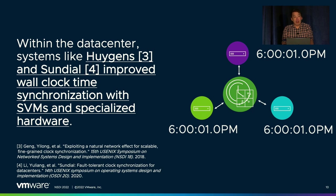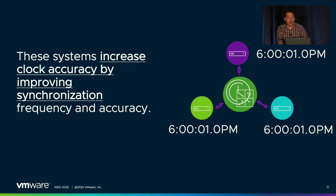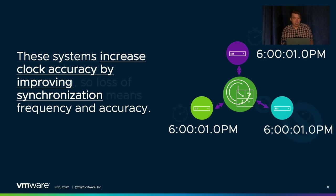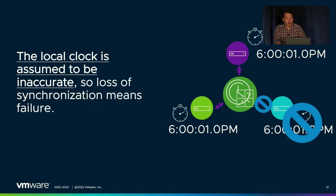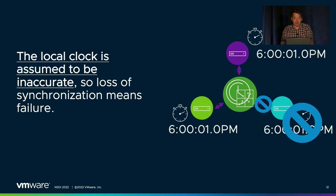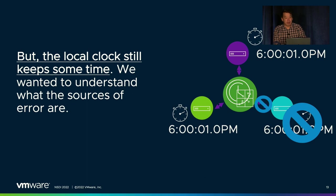They enable microsecond-scale accuracy with machine learning techniques and specialized hardware. The focus of these systems is to make clocks more accurate by improving synchronization accuracy and increasing how frequently systems are synchronized. A common theme is that they assume the local clocks being synchronized are completely unreliable — that if synchronization is lost, the clocks have failed. But the clocks keep some time; it's not like your clocks go crazy the second you lose synchronization.